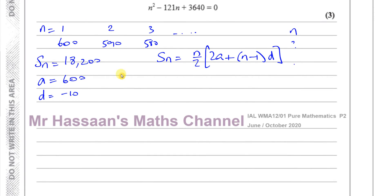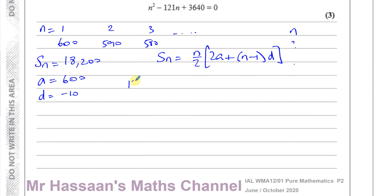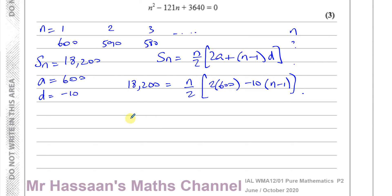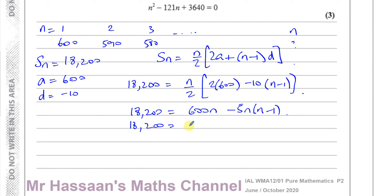So 18,200 equals N over 2 times 2 times 600 plus N minus 1 times negative 10. Multiplying this out: N over 2 times 2 gives 600N, and N over 2 times negative 10 gives minus 5N, so we have 18,200 equals 600N minus 5N squared plus 5N. Bringing everything to one side gives 5N squared minus 605N plus 18,200 equals 0.